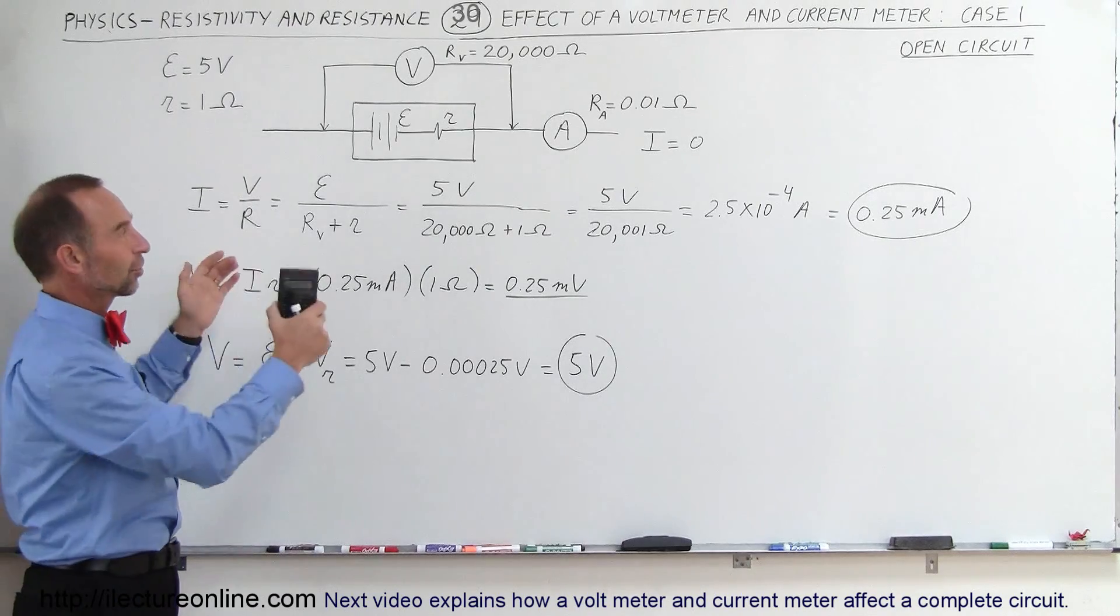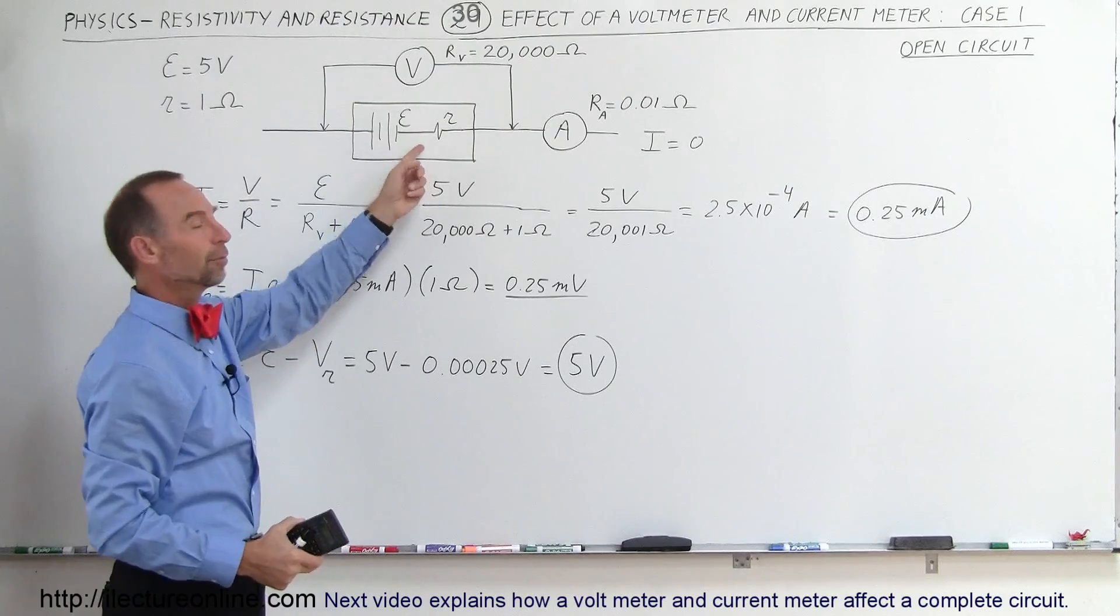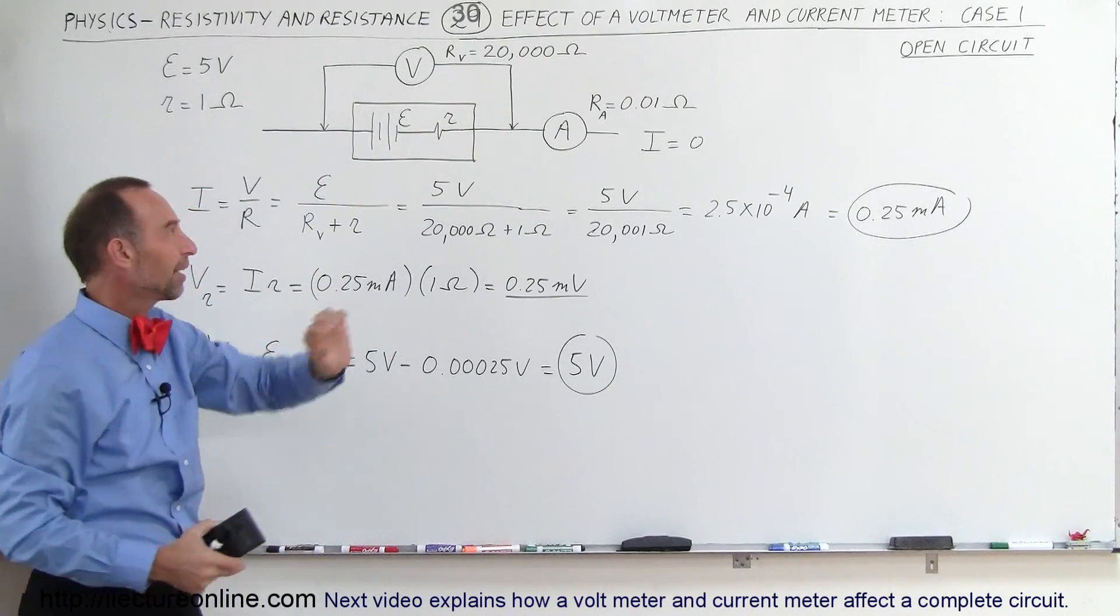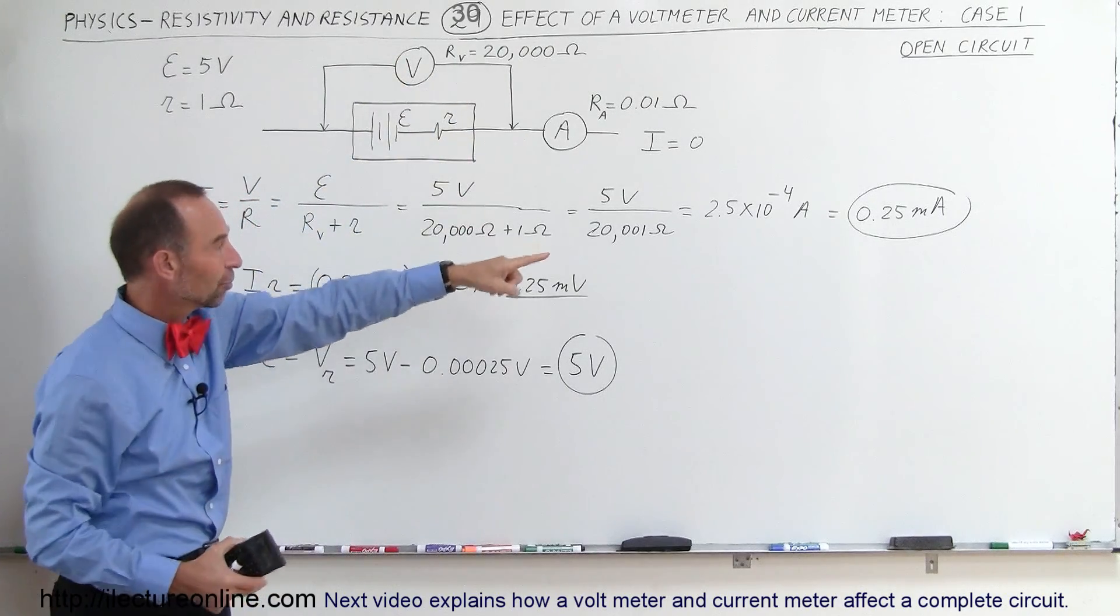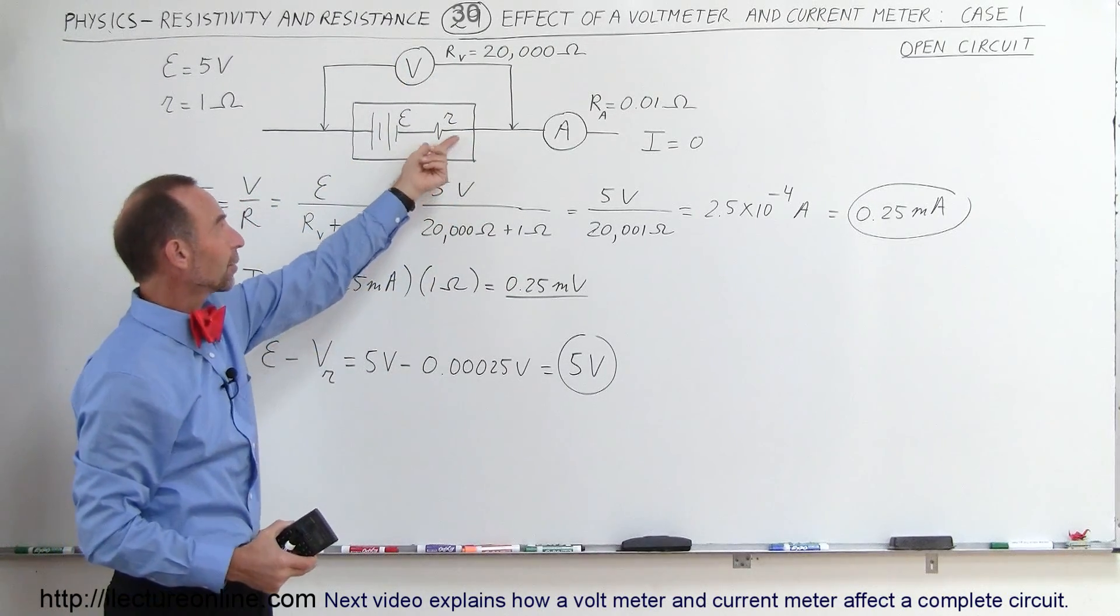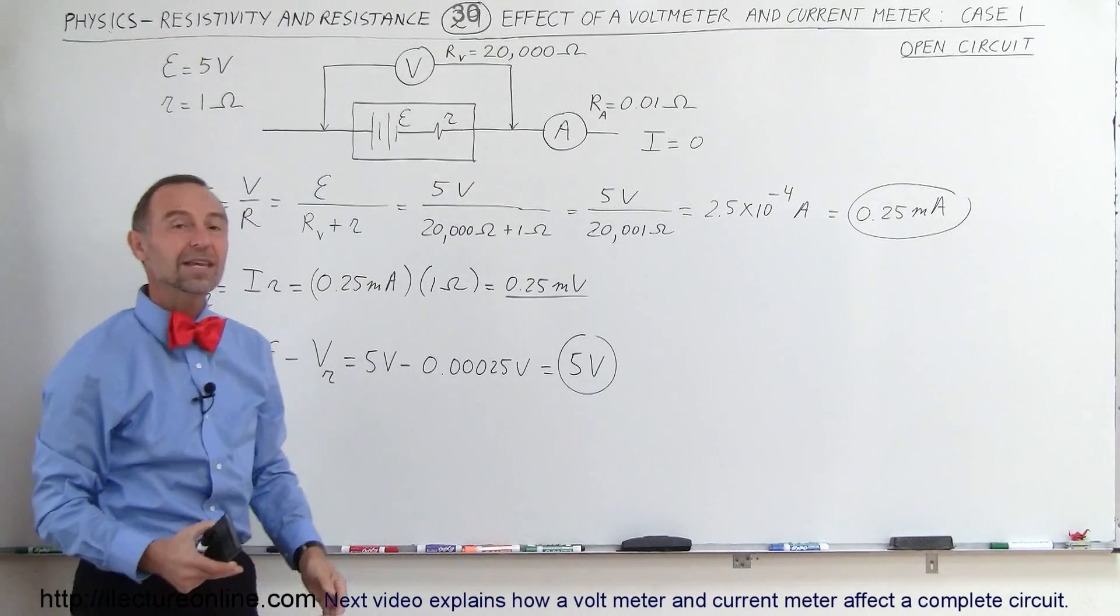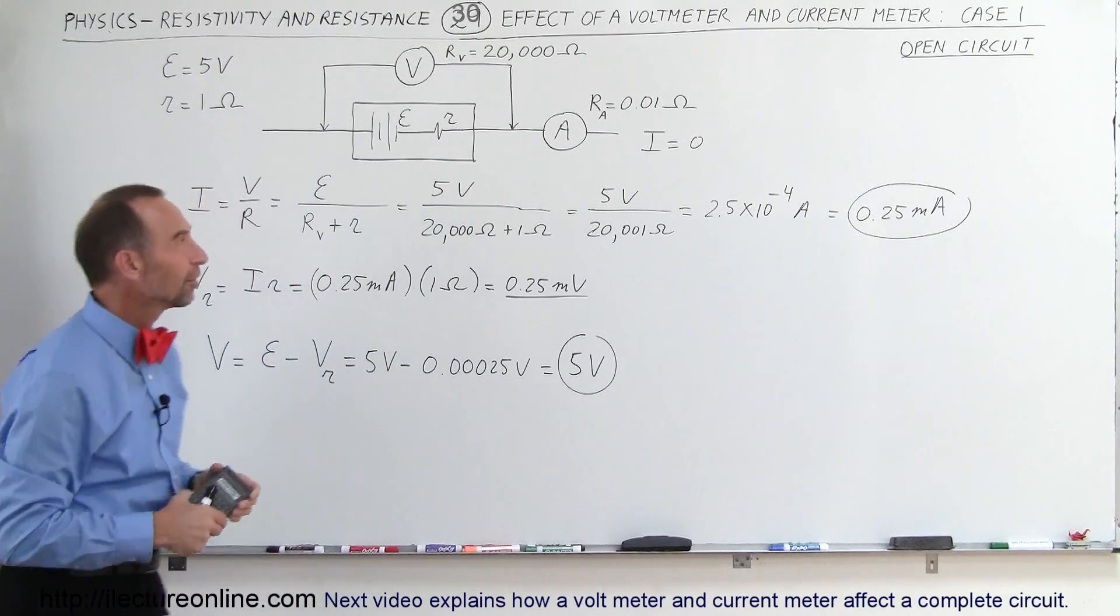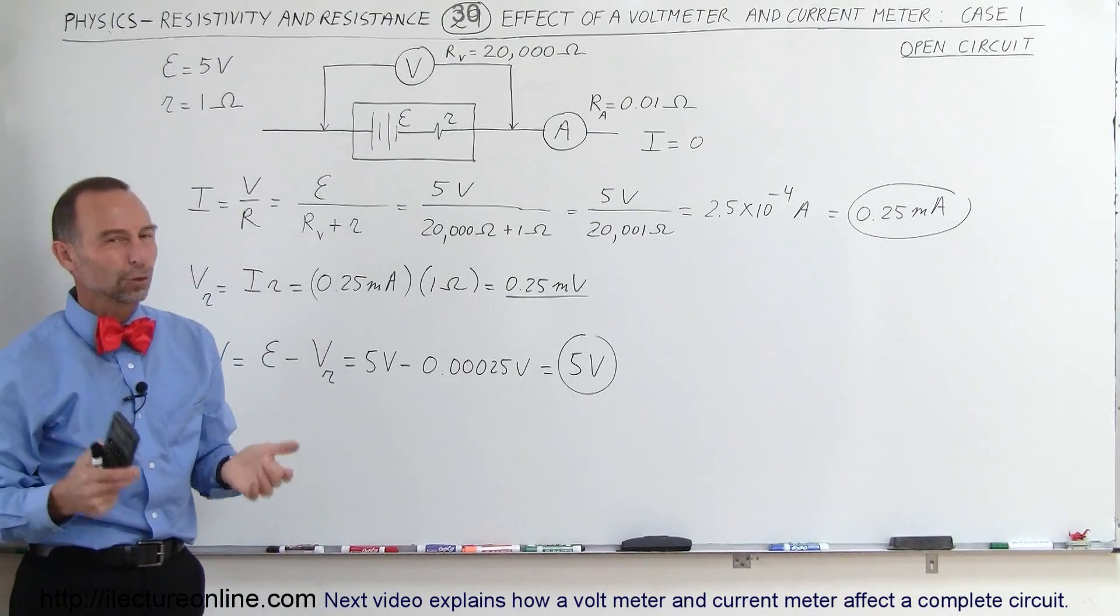So you can see that when you have a circuit that is not connected to anything, placing the voltmeter on there will have a very small effect, but it's virtually insignificant. The current coming through that part of the circuit is very small. Therefore, the voltage drop across internal resistance is very small. So you're still seeing 5 volts across the battery, as if there's no internal resistance and as if there's no current through there.